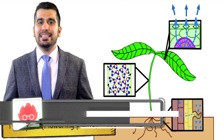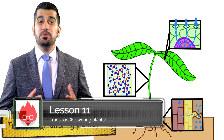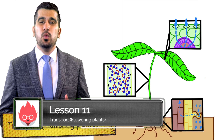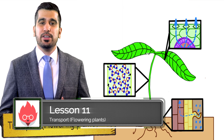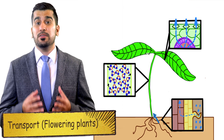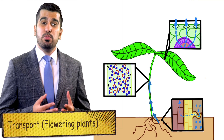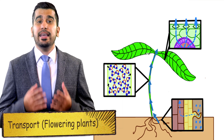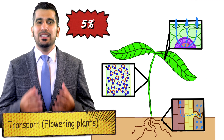Plants don't have a metabolically active pump like the heart to move fluid around. Instead, water movement is driven by negative pressure generated by the evaporation of water from the leaves. Yet despite the importance of water to a plant, it only actually retains 5% of it.